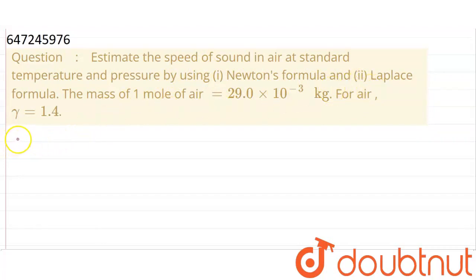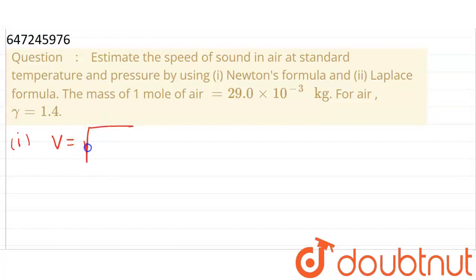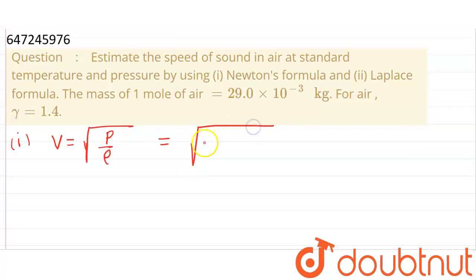First of all, we need Newton's formula. Newton's process of sound propagation assumes formation of compression and rarefaction in air as isothermal. So the formula we need is: V = √(P/ρ). Pressure is 1 atm at standard conditions. 1 atm = 1.013 × 10⁵ N/m². So pressure in SI units is obtained.